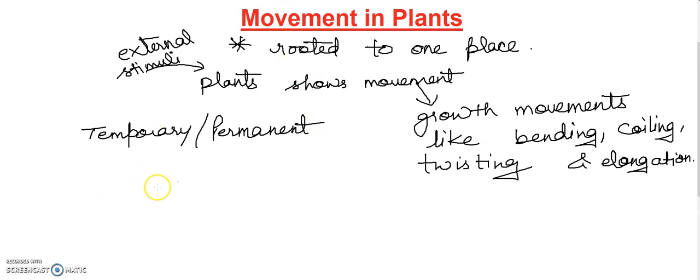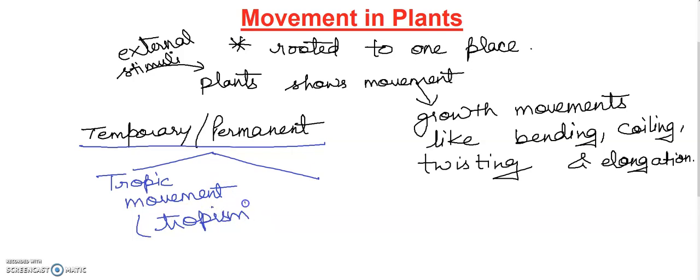So plant movement, if we talk about external stimulus, can be broadly grouped into two categories. They are also known as tropic movement and nastic movements.